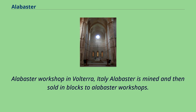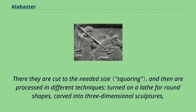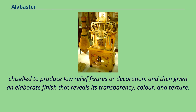Alabaster workshop in Volterra, Italy. Alabaster is mined and then sold in blocks to alabaster workshops. There they are cut to the needed size, and then processed in different techniques: turned on a lathe for round shapes, carved into three-dimensional sculptures, chiseled to produce low-relief figures or decoration, and then given an elaborate finish that reveals its transparency, color, and texture.